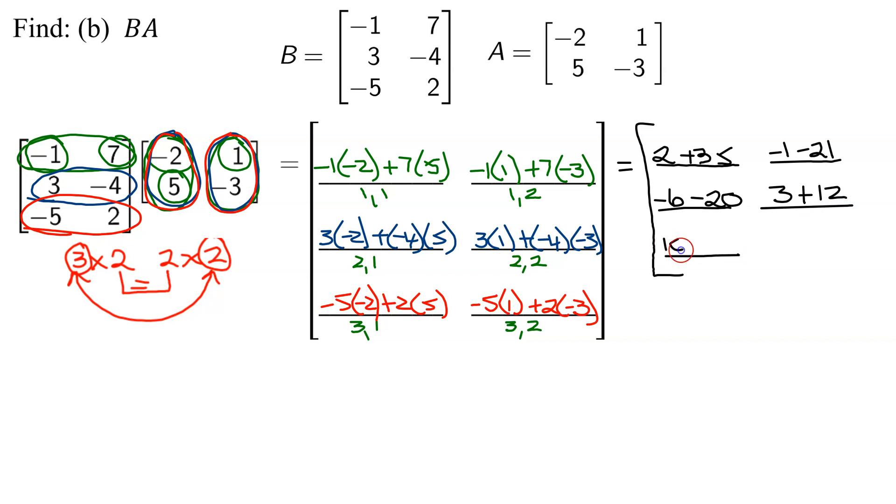Negative five times negative two is positive 10, plus two times five is 10. Last element, negative five times one is negative five, plus two times negative three is negative six. So now just tidying up. Two and thirty-five is thirty-seven. Negative one minus twenty-one is negative twenty-two. Negative six and negative twenty is negative twenty-six. Three and twelve is fifteen, ten and ten is twenty, and negative five and negative six is negative eleven.